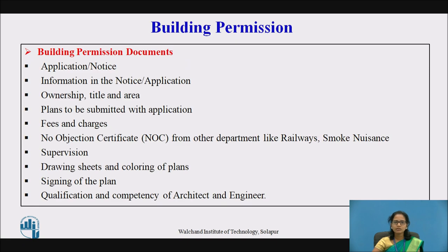These are the documents which are needed for building permission. First is the application form or the notice. The information in the notice — whatever information is accompanied in the notice, the attachments have to be done accordingly. In that you have the ownership, the title, and the area.